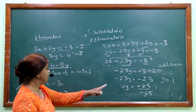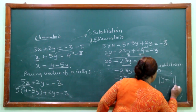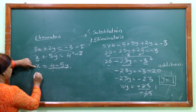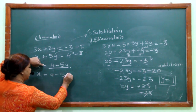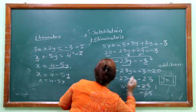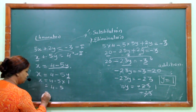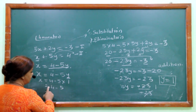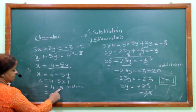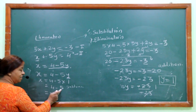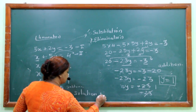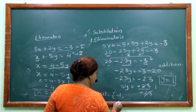Placing y equals 1 into x equals 4 minus 5y: x equals 4 minus 5 into 1 equals 4 minus 5. Since 5 is greater with minus sign, x equals minus 1. Solution set is (minus 1, 1).